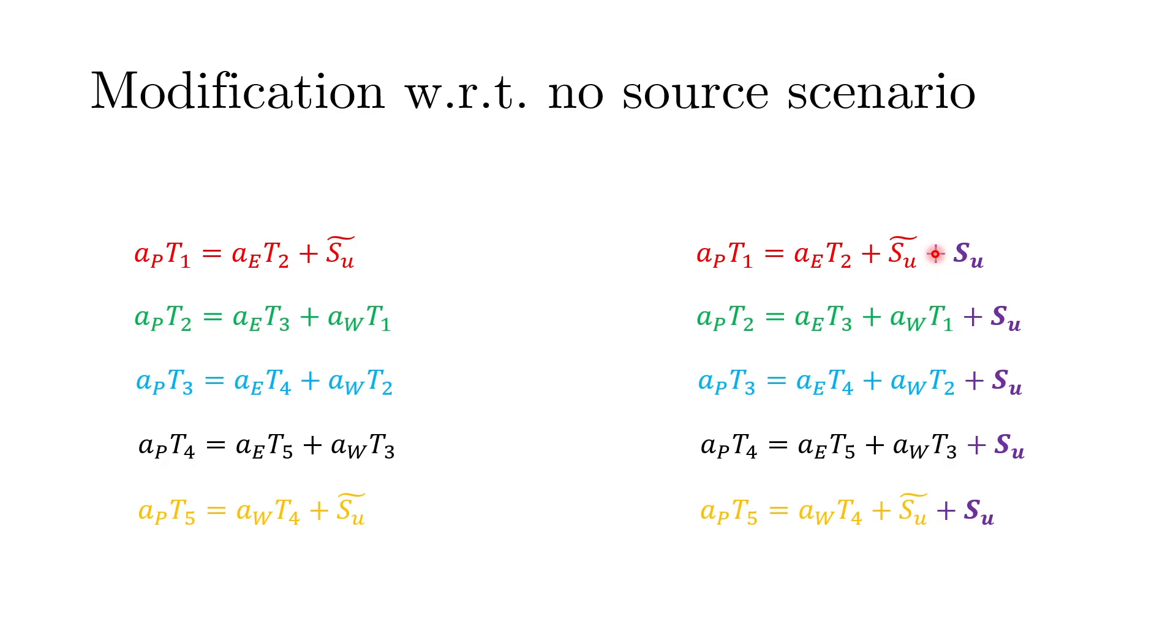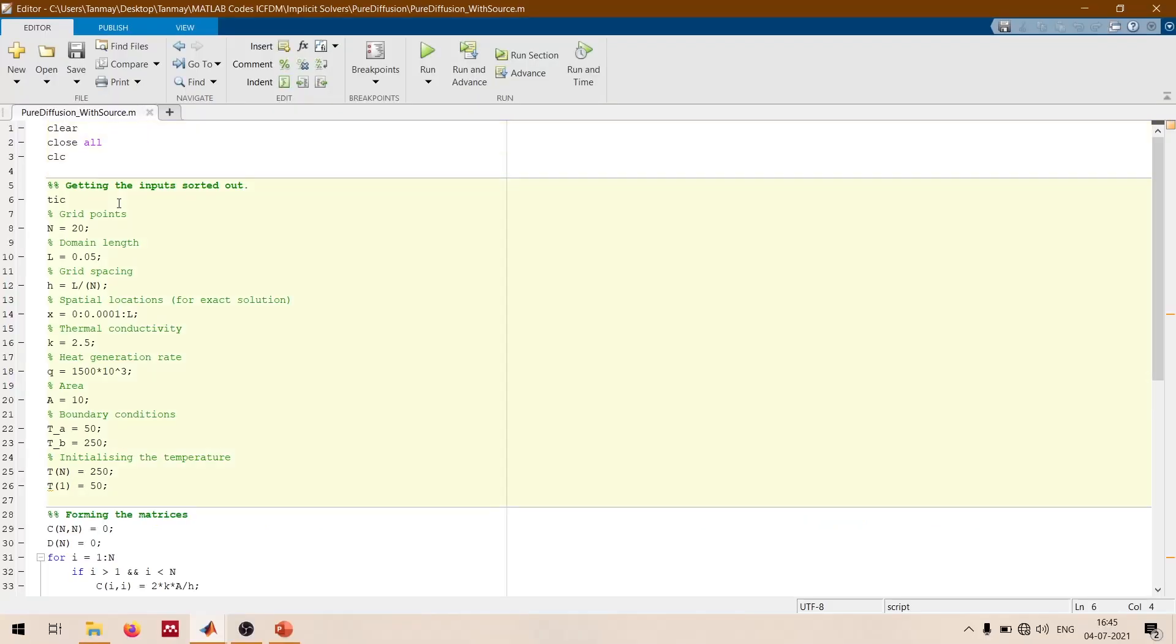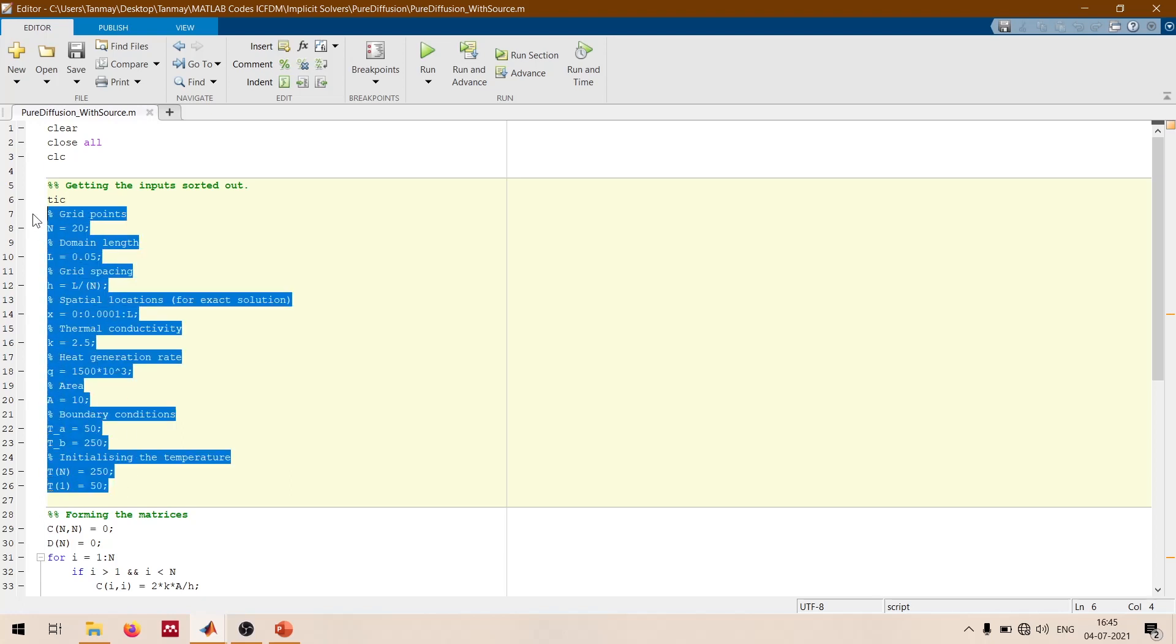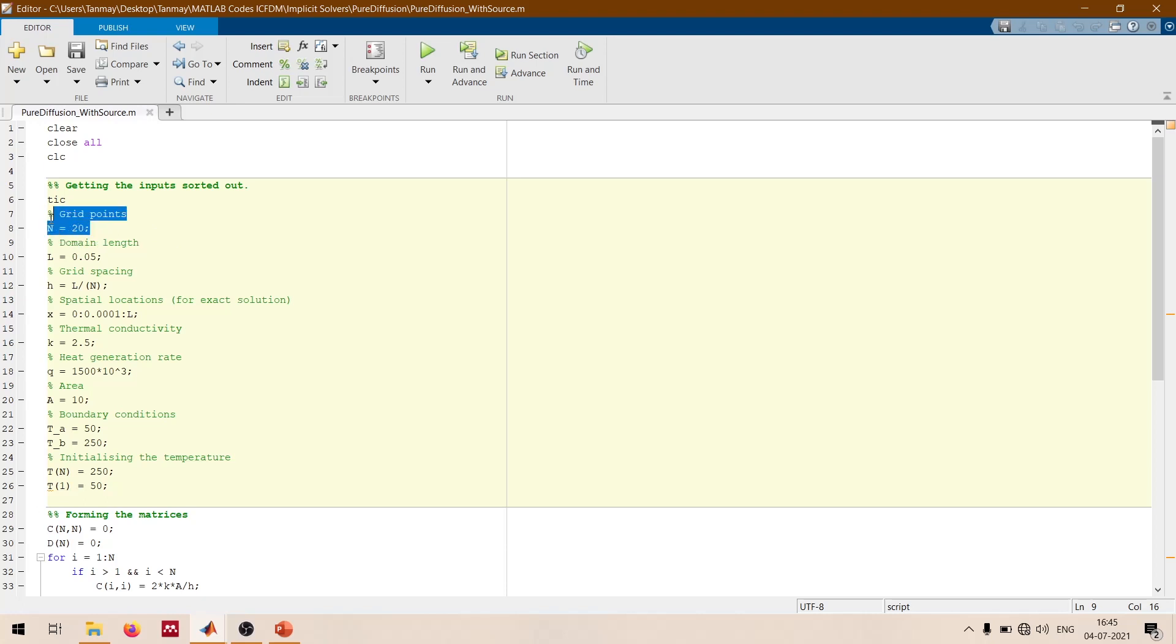So now let us dive into the MATLAB world. I have taken the code exactly from the pure diffusion code that we have looked before. I have defined all the properties that were mentioned in the demo problem. I am taking the example with 20 grid points. The domain length is 5 cm. Based on that we can define the grid spacing and the spatial location for all the points. This is the thermal conductivity and this is the heat generation rate. The area is 10 meter square and we have the boundary conditions embedded in these two variables.